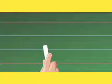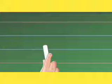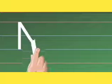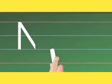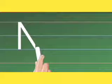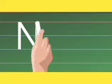Start from the top. Make the standing line down. Go back to the top and draw a slanting line to the right. Now draw one more line up to the top.